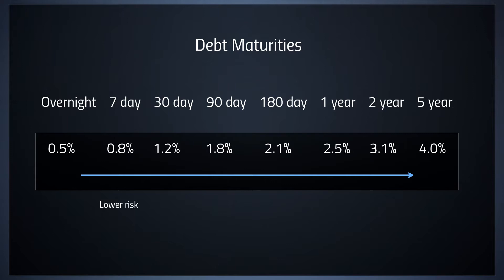There's interest rate volatility as well as other forces at work that increase the risk of that borrowing. So we have our lower risk at overnight to 7 days, all the way up to our 5-year, which reflects a much higher risk, and so we're demanding a higher compensation to reflect that. Together, these make up the term structure of interest rates.